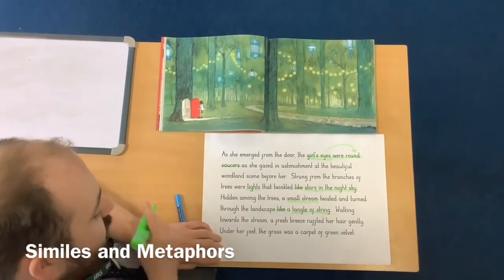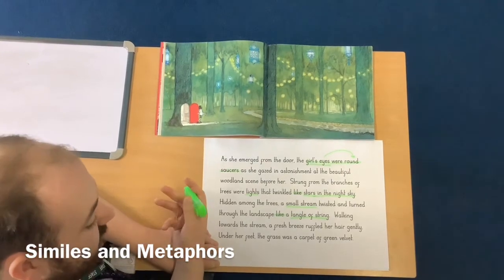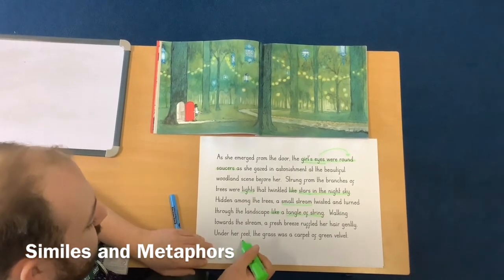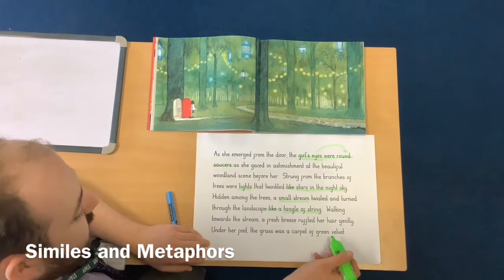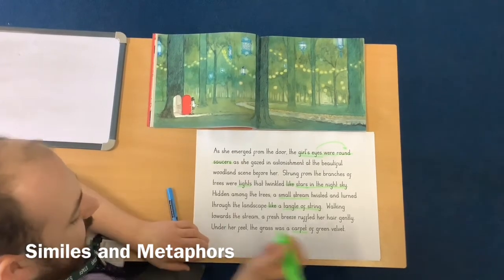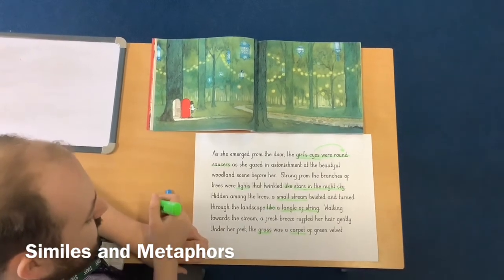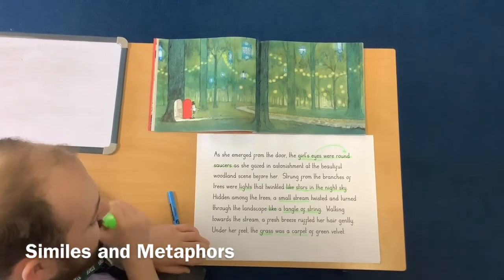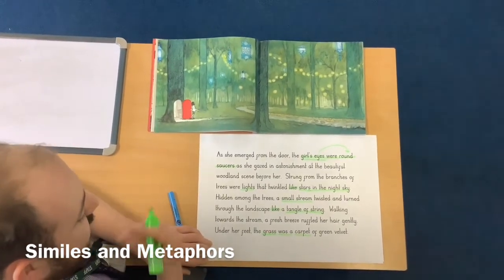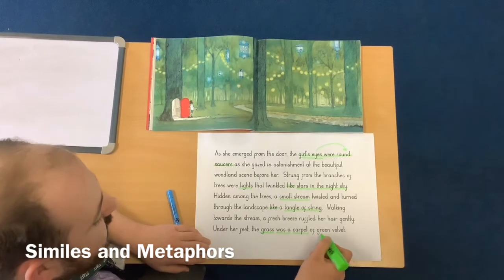'Walking towards the stream, a fresh breeze ruffled her hair gently.' Is there any simile or metaphor in there? I can't see any. What about the last one: 'Under her feet, the grass was a carpet of green velvet.' We can see that carpet is being compared to something the girl is walking on — the grass. The phrase 'was a' tells us that it is something, so it cannot be a simile but has to be a metaphor. The grass, which the girl is standing on, was a carpet of green velvet.